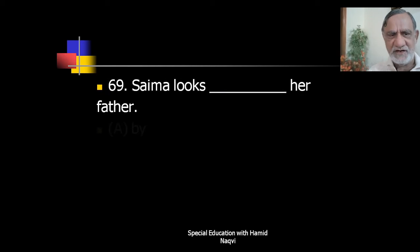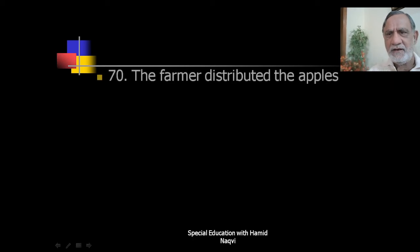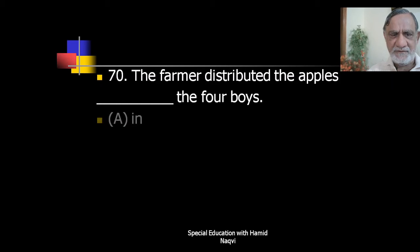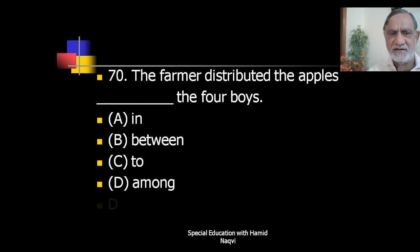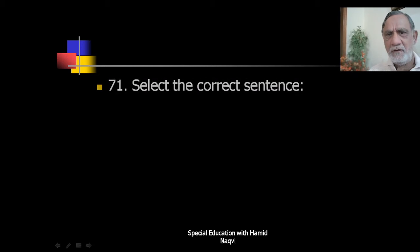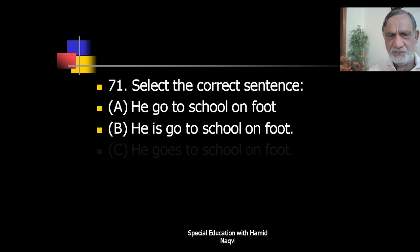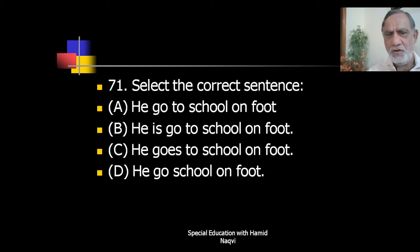'The farmer distributed the apples ___ the four boys.' The correct is 'among' — the farmer distributed the apples among the four boys. Select the correct sentence from options; the correct one is C — he goes to school on foot. Choose the word nearly opposite in meaning to 'accumulate': the correct antonym is A — disperse.